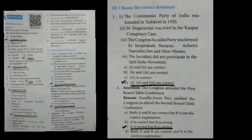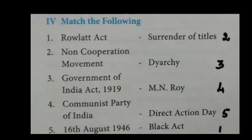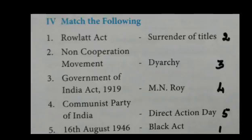Roman numeral III: Choose the Correct Statement. Question 1: Answer D — statements 1, 2, and 3 are correct. Question 2: Answer C — A is wrong but R is correct. Question 3: Answer D. Now, Match the Following: Rowlatt Act — Black Act; Non-cooperation movement — Surrender of titles; Government of India Act 1919 — Dyarchy; Communist Party of India — M.N. Roy; 16th August 1946 — Direct Action Day. The order of answers is: 2, 3, 4, 5, 1.